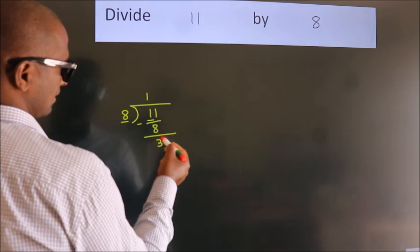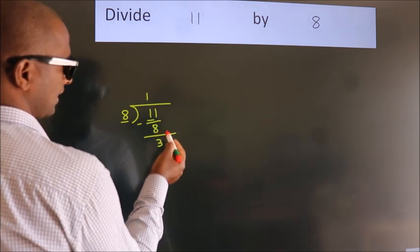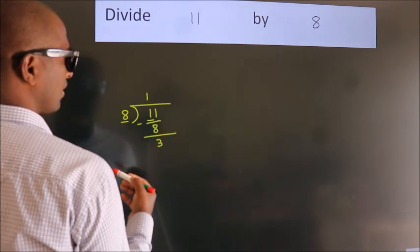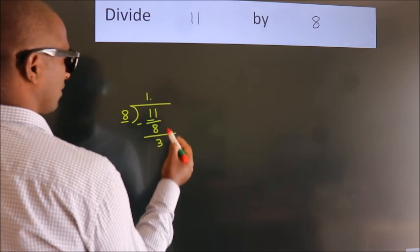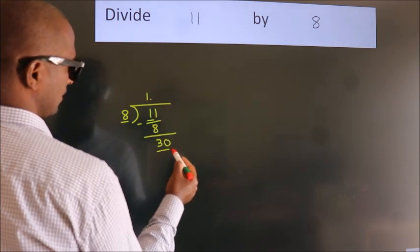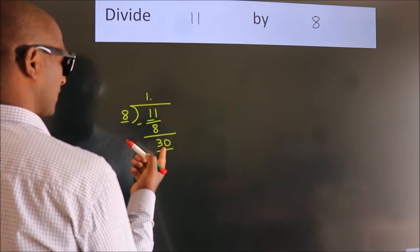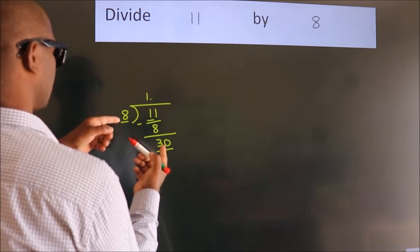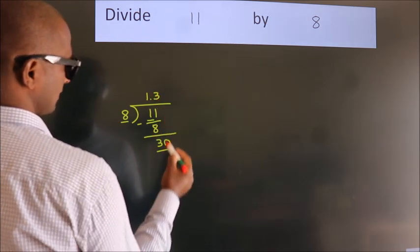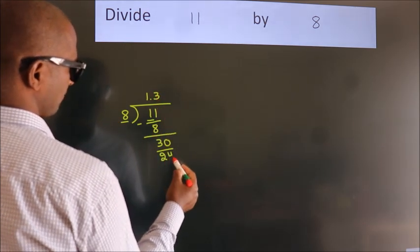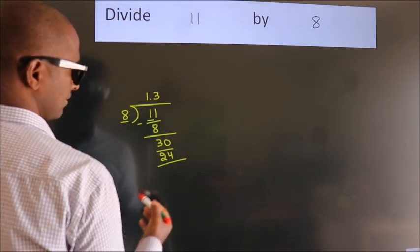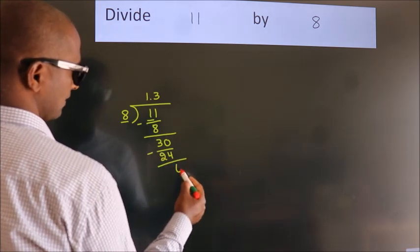After this, there are no more numbers to bring down, so we put a dot and take 0. So, 30. A number close to 30 in the 8 table is 8 times 3, which is 24. Now we subtract and get 6.